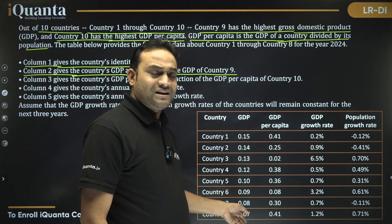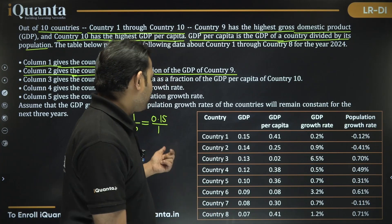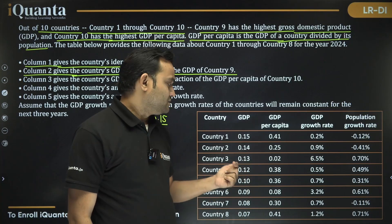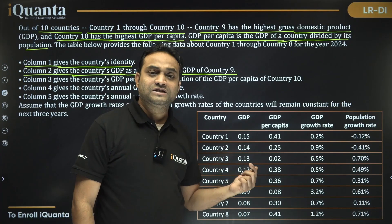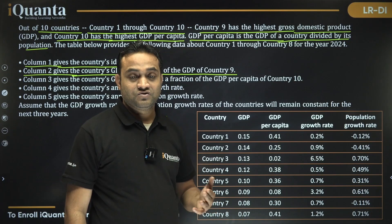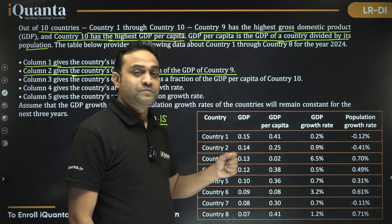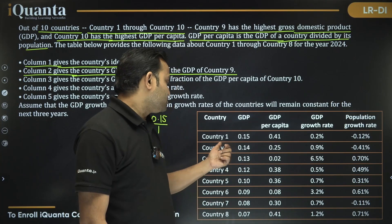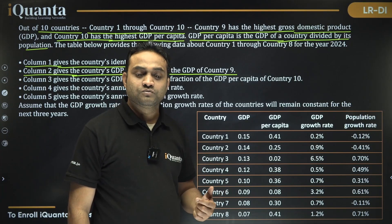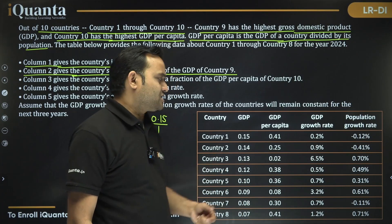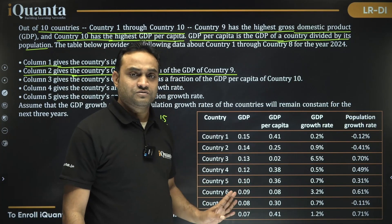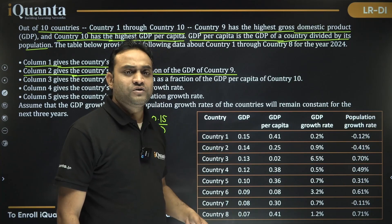With respect to that assumption, if you take GDP of country 9 as x, then GDP of country 1 will be 0.15x, GDP of country 2 will be 0.14x, and so on. If you assume it as 100, country 1's GDP will be 15, country 2's will be 40, etc. The best approach: just take it as 1. That way you don't need to change any values or introduce x at all.